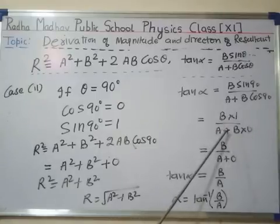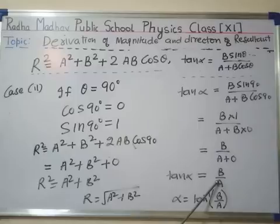This gives B/(A + 0) = B/A. Therefore tan α = B/A, so α = tan⁻¹(B/A).